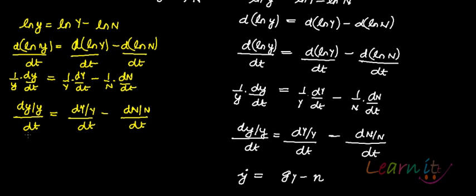But it is given to you that the growth rate in capital Y is given by GY and growth rate in N is given by small n. So this per capita GDP is growing at GY minus N.